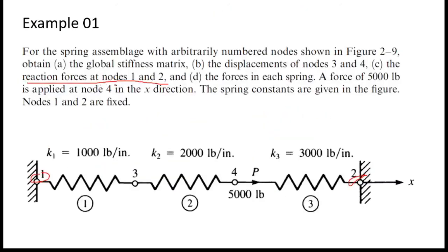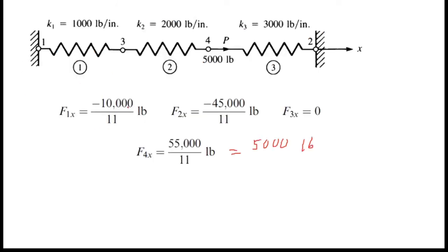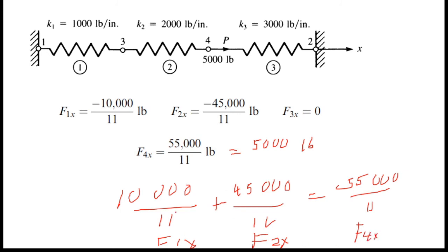These are the reaction forces at nodes 1 and 2. You can see a thing here: if we consider the numerical value is 10,000 over 11, and if I add to this 45,000 over 11, this is F1x, this is F2x, and this is F4x.